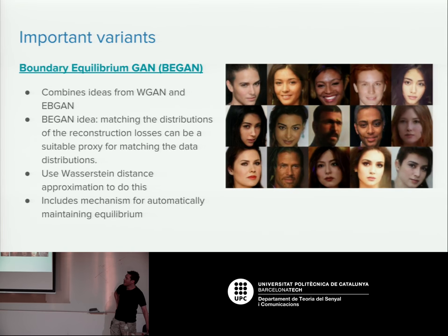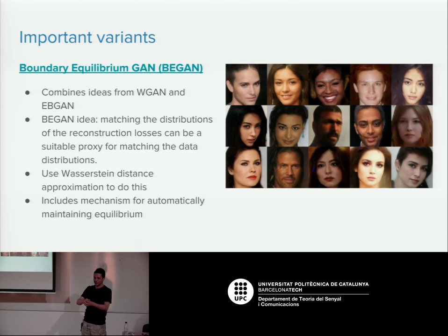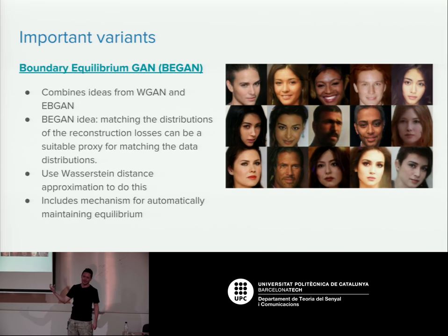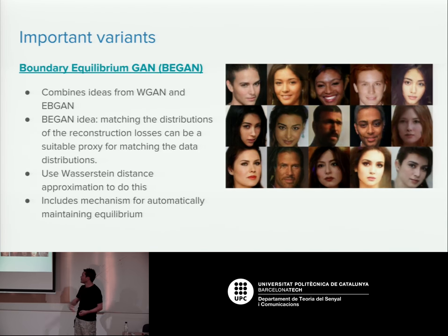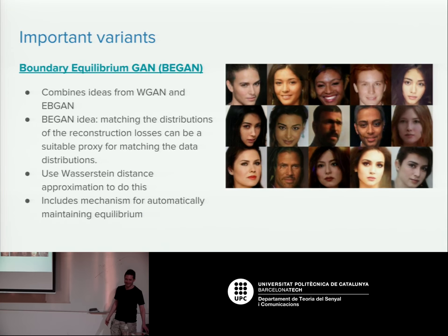One concern about convincing generated results is whether the model has just memorized the dataset. If you want to present these results in a paper, you should show the nearest neighbor in the training set for each generated image — if they look identical, the model may just be reproducing training data rather than generating truly novel content.